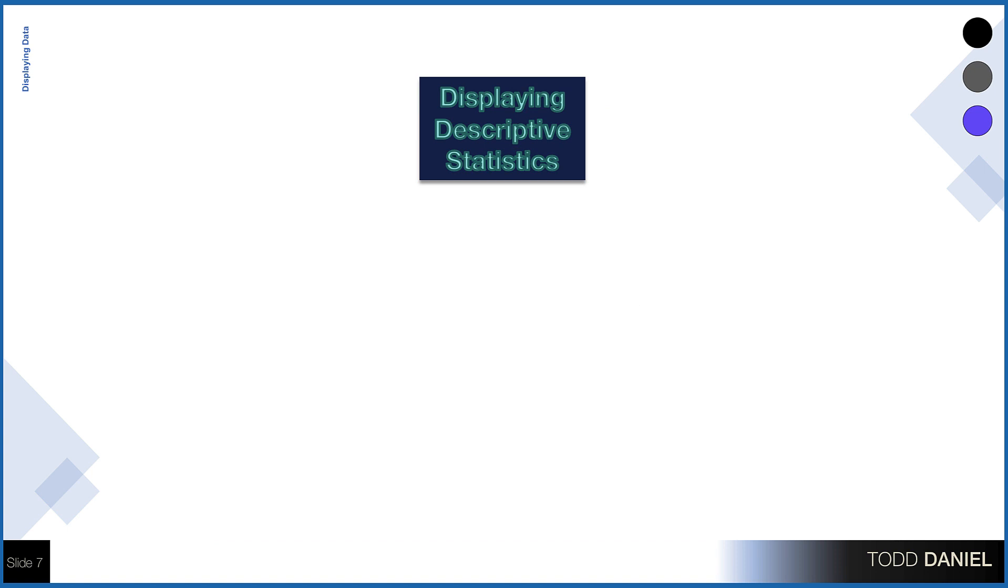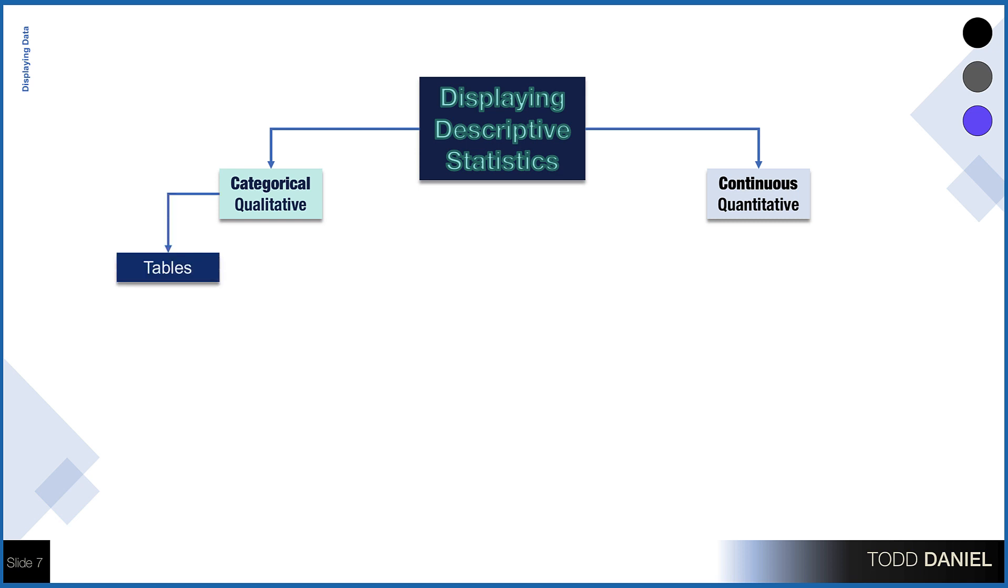Well, once we've collected our data, we need a way to describe our variables. Depending upon the goal of our research, we may choose to describe our data using tables with numbers, or by using graphs. So let's get acquainted with our options. Now remember that we have categorical or qualitative data, and we have continuous or quantitative data. Both types of data can be described using a table or a graph.